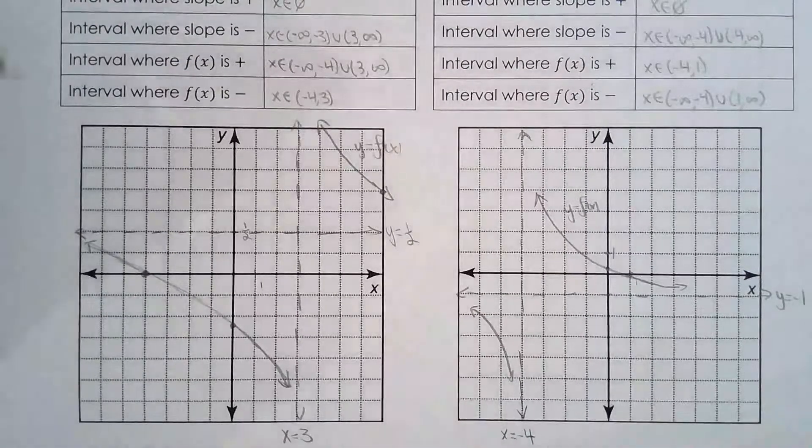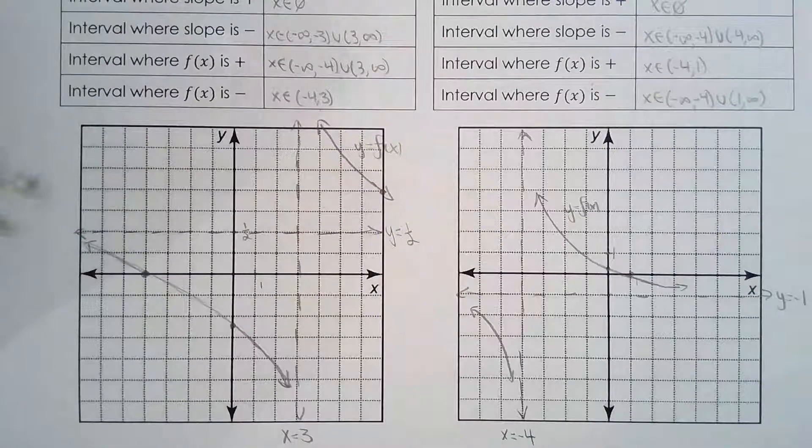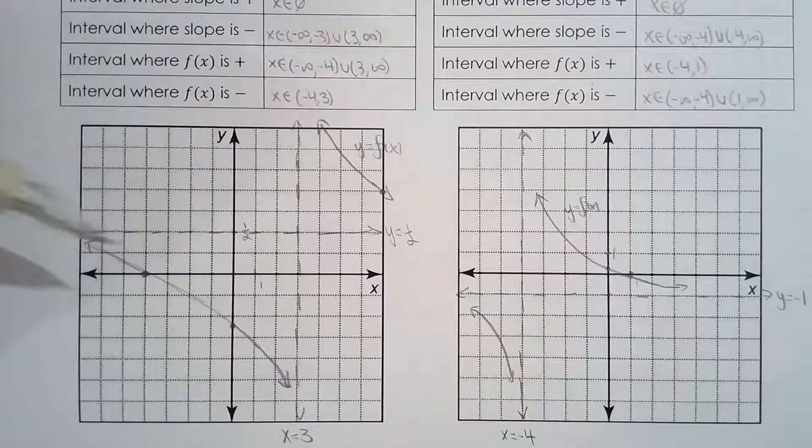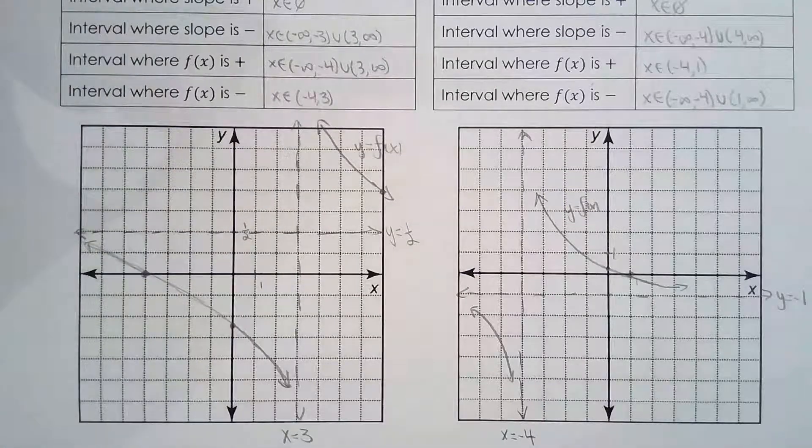So knowing what the x-intercepts are, what the y-intercepts are, what the horizontal asymptote, what the vertical asymptote is, and knowing the fact that it doesn't cross the horizontal asymptote, you can graph these functions really quickly.